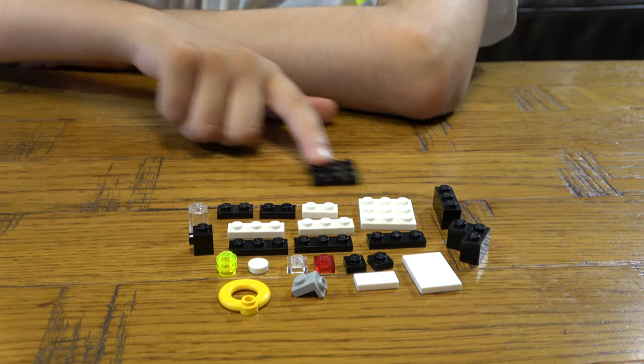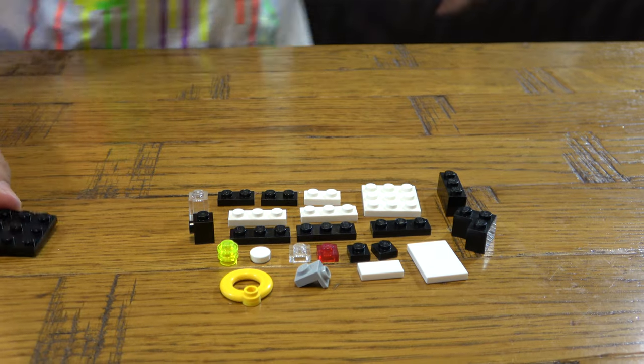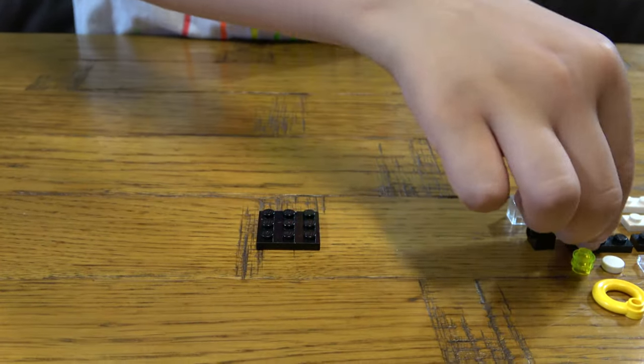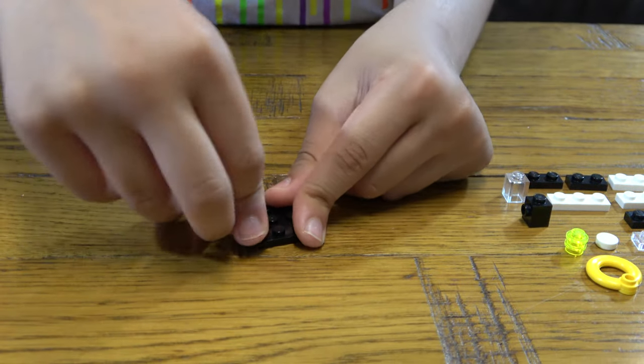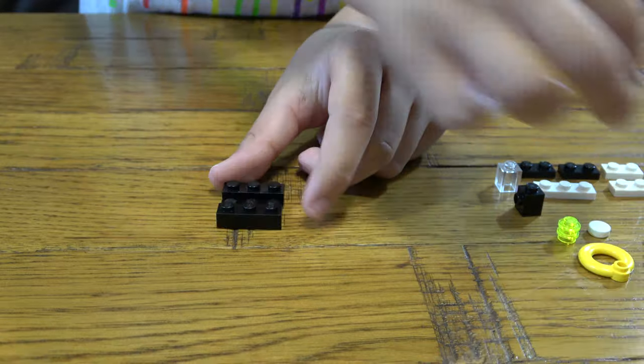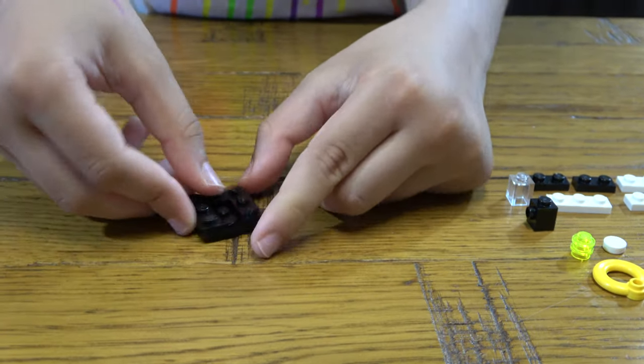First, you're going to get this three by three tile, two of these one by three tiles like that, and then a one by one tile, two of them to go like that.